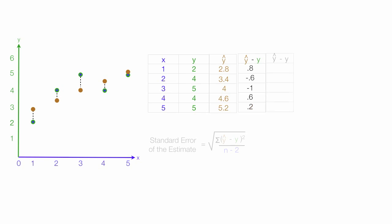Then I take this column, and I'm going to square all the values. 0.8 squared is 0.64. Negative 0.6 squared is 0.36. Negative 1 squared is 1. And 0.6 squared is 0.36. 0.2 squared is 0.04.